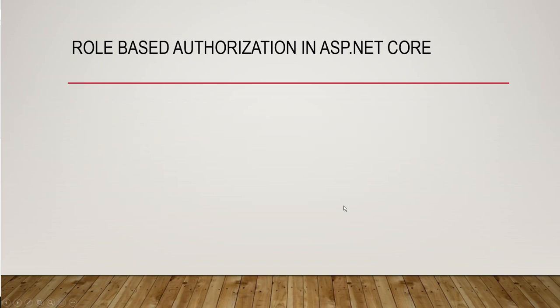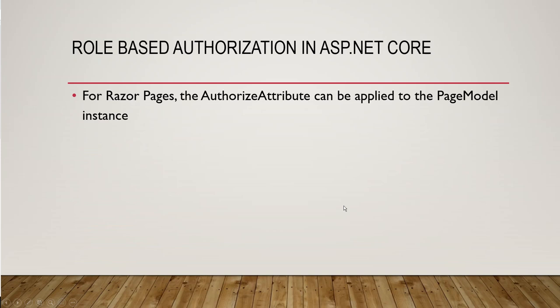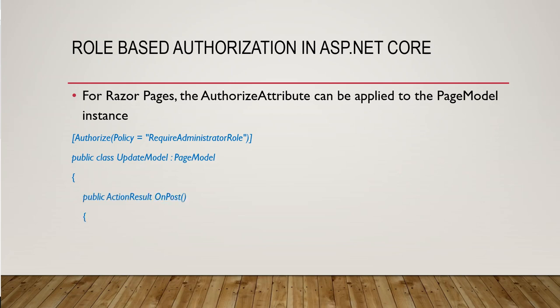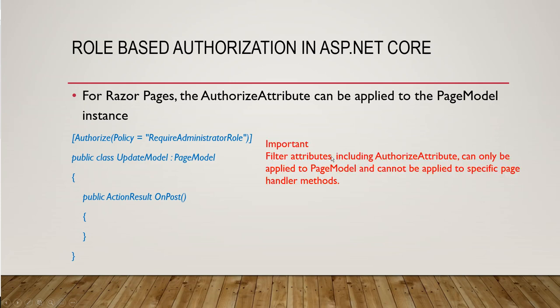For Razor Pages, the Authorize attribute can be applied to the page model instance. For example, you can set Authorize with Policy equal to 'RequireAdministratorRole' on a page model. Before ending, in this tutorial we have learned about role-based authorization in ASP.NET Core 3 and how role checks are added in code.